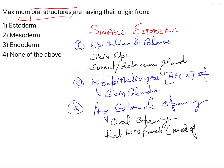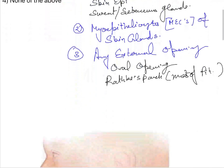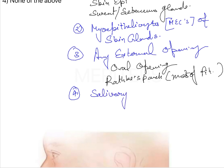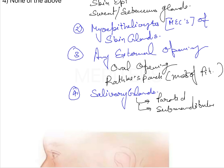Most of the pituitary opening is going to be formed from the Rathke's pouch. The fourth thing derived from the surface ectoderm is going to be your salivary glands — all the major glands: the parotid, the submandibular, and the sublingual gland.